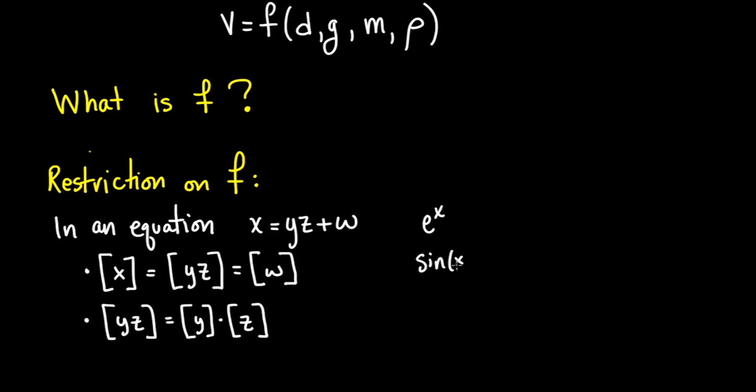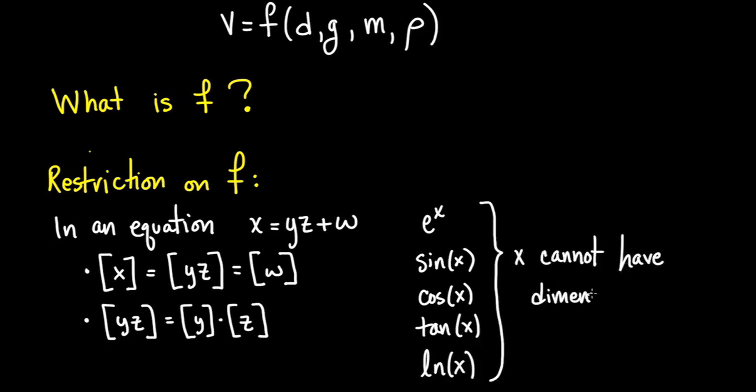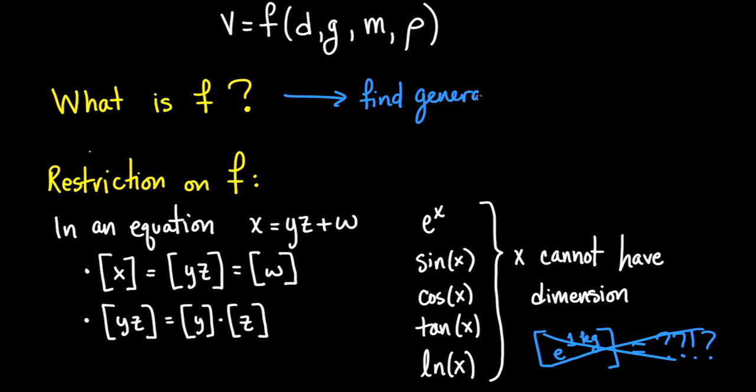And many functions - exponential, logarithmic, trigonometric - cannot have input variables that have dimension. What would e to the one kilogram mean? What units could it possibly have? We're going to show you a problem-solving method that will allow you to find the most general form of such a function. This method is called dimensional analysis.